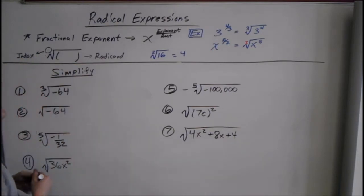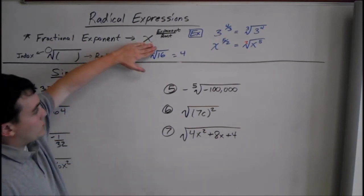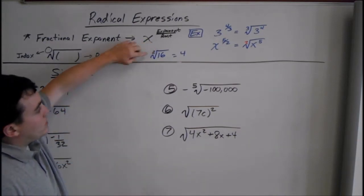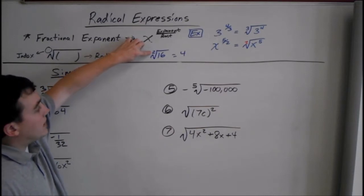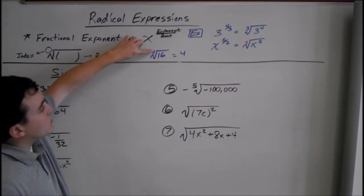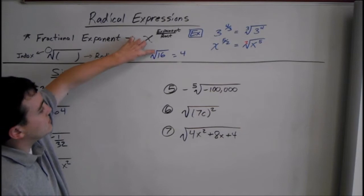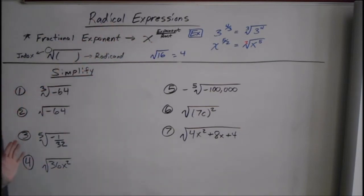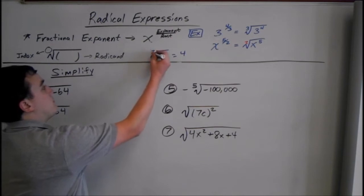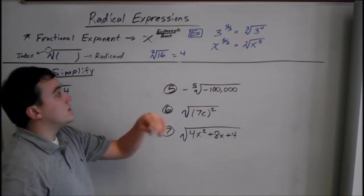Usually when we have square roots, we don't write the two up here, but that's implied — because we're looking for two things that multiply to give us 16. So another way of writing that would be the square root of 16. You don't need the two up top, but you can write it. The square root of 16 is 4.